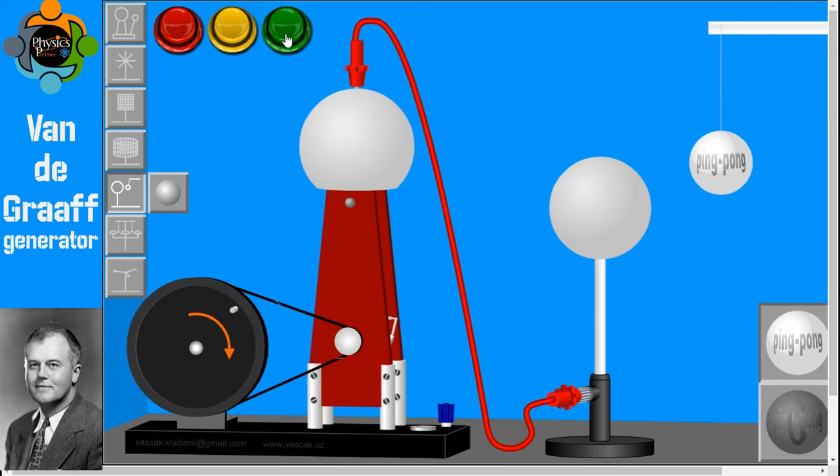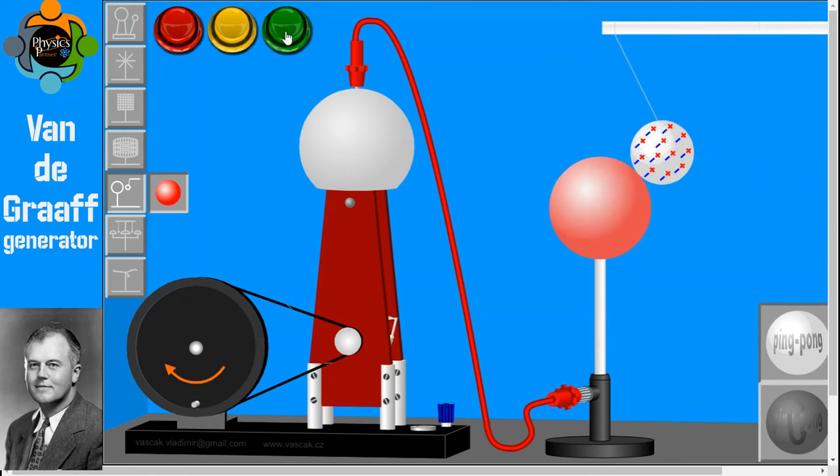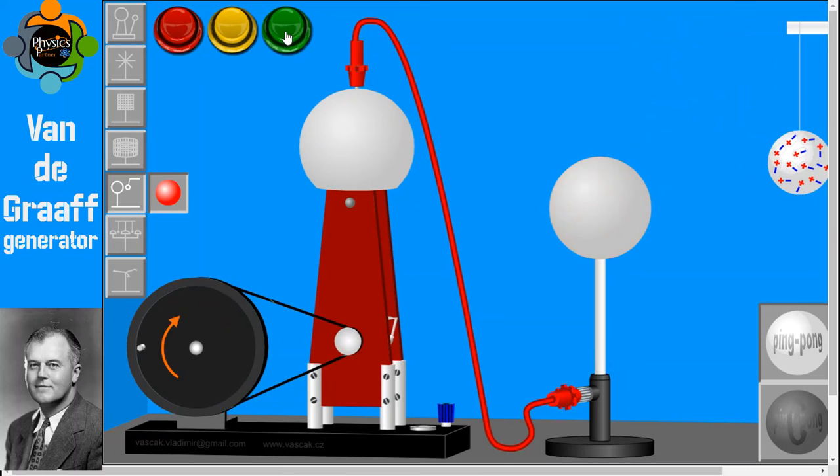It will definitely attract. Why does it happen? Look at the charges of the ping pong - they are mixed with positive and negative. When I brought it near to the dome, it will start attracting because the dome is provided positive charges, so positive charges repel each other whereas the negative charges start attracting each other. You can see there in the screen, negative charges are attracting each other.